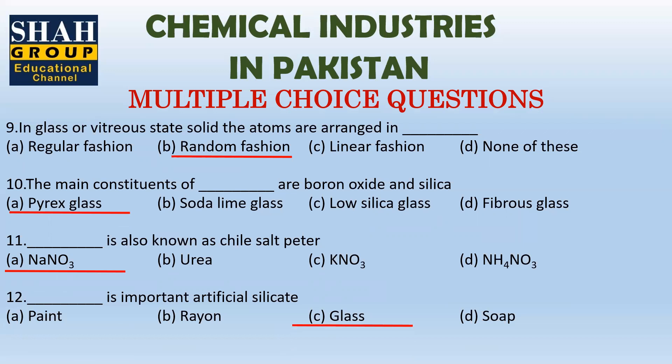Question twelve: glass is the important artificial silicate. Paint mein silicate nahi hoti, ribbon mein nahi hoti, soap mein nahi hoti — glass purely silicate hota hai.